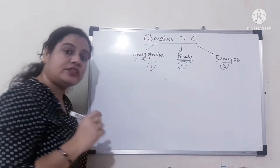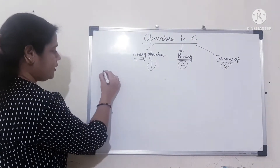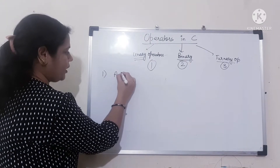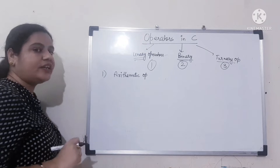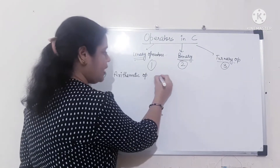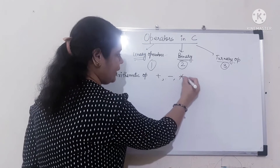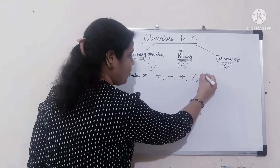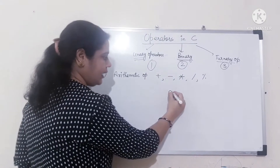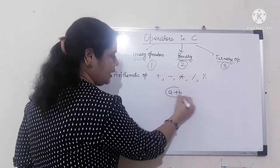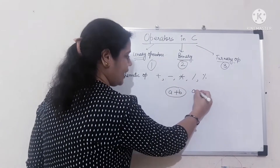The first category is arithmetic operators. Arithmetic operators are plus, minus, multiply, divide, and modulus. Plus is used to add two numbers — like A plus B will add up the numbers. If you want to subtract, you do A minus B.